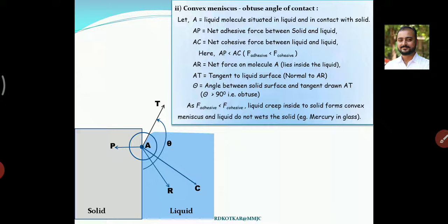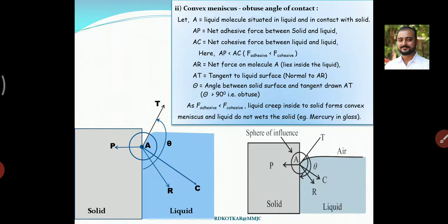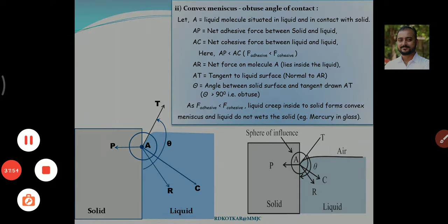This occurs when mercury is filled inside glass. So in this case, cohesive force is greater compared to adhesive force, liquid does not wet the solid, and a convex meniscus is formed. Compare both diagrams in your book to understand how the convex meniscus or obtuse angle of contact is formed. In this manner we discussed the formation of shapes of meniscus — the remaining topics will be studied in the next lectures.